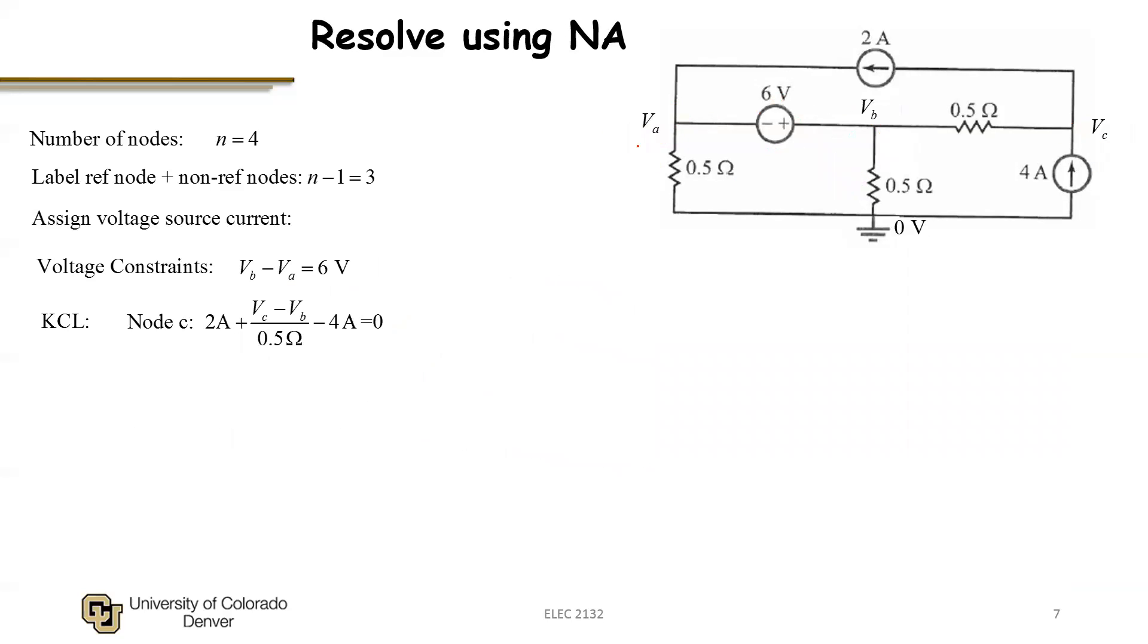If we resolve this using the nodal analysis which we're familiar with, the difference is that I would have to express a supernode. Why? Because I could not use KCL about node A, because I don't know what that current is. I could not do it about node B. Rather, I would have to form a supernode and constrain that the currents flowing out of the supernode sum to zero. That's a normal node analysis, which obviously still works.